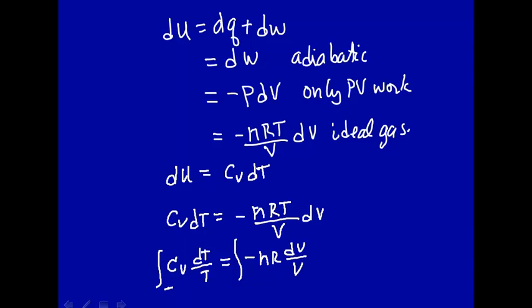This will go from T1 to T2, and this will go to the corresponding V1 volume to V2, second volume. Let's make the assumption that cV is a constant.